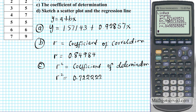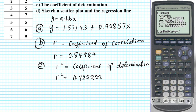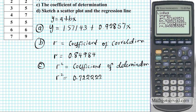One thing to highlight: for the linear regression command, I did not specify what my lists were, because with only two lists, the default is to use list 1 as x and list 2 as y. If you want to be more specific — for example, if you have many lists — go back to stats, calculate, option 8, and specify: second function 1 for list 1, comma, second function 2 for list 2, then enter. You get the same result.